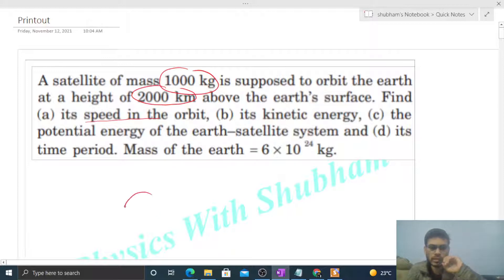So we have Earth like this, right, and a satellite that moves in a circular orbit. Let's say the height from the surface of Earth is small h, radius of the Earth is capital R, mass of the Earth is capital M, and mass of this satellite is small m.